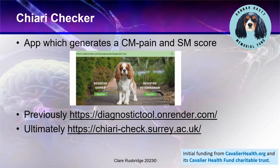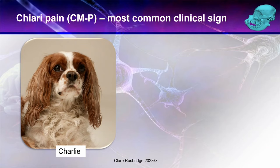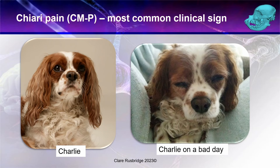So first we're going to talk about Chiari malformation and the signs it's associated with, and that is undoubtedly pain. This is Charlie, one of my patients affected by this condition. This lovely picture shows you Charlie when he's a happy dog, but this shows Charlie on a bad day. We have permission from Charlie's mum to use these pictures, and this particular bad day was when the pressure was rapidly changing because there were thunderstorms forecast. You can see from this that Charlie looks like he has a headache — his eyes are partially closed, he has a more worried expression, and his head is down.